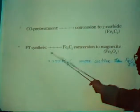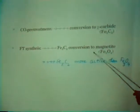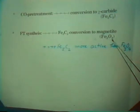The present measurement seems to indicate that the syngas pretreatment in this case converts oxide into chi-carbide. During FT synthesis, chi-carbide seems to be converted into magnetite. And chi-carbide seems to be more active than the oxide.